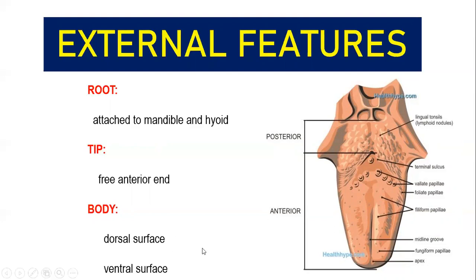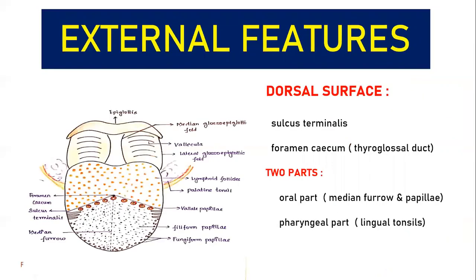So far, three features: the root, tip, and the body. Root is attached to mandible and hyoid bone by means of muscular attachments — that is why it is not swallowed during deglutition. Tip is represented by the free anterior end of the tongue. Body has two surfaces: the dorsal surface and the ventral surface.